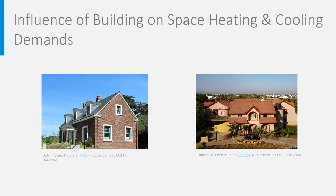I will show it on two examples of a similar house: one being located in the Netherlands, which could look like the picture on the left, and the other one being located in India, in the region of Mumbai, which could look like the one on the right. Both houses have 35% windows on all facades and the Indian house also has solar blinds.